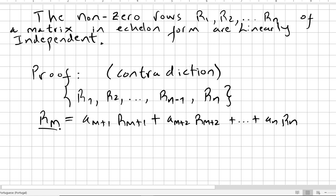So let us say that Rm is a linear combination of Rm+1, Rm+2, etc. We assume that they were dependent.